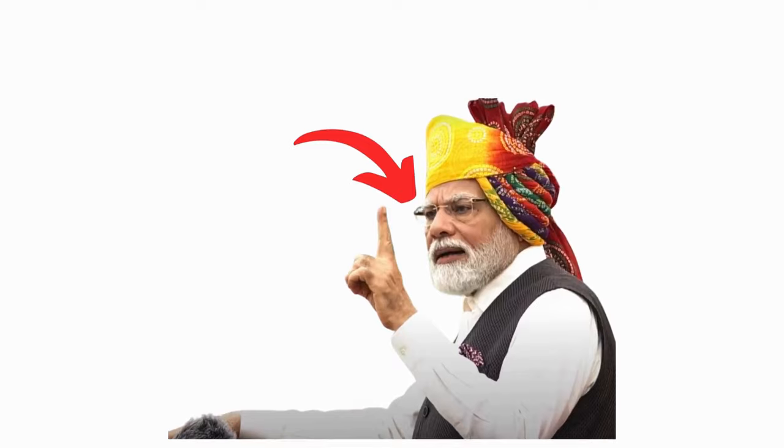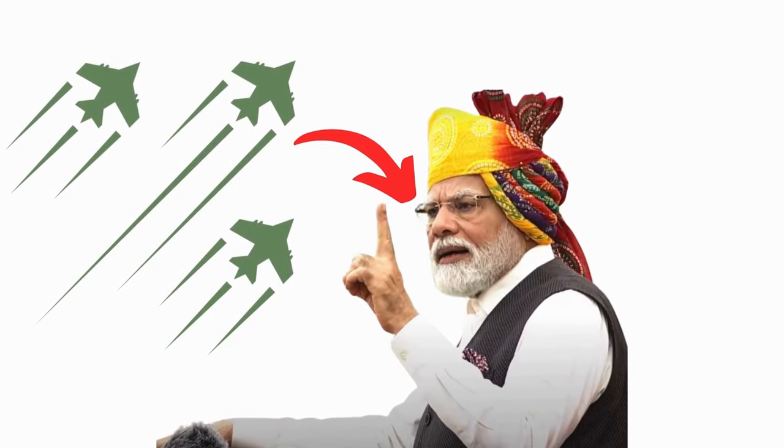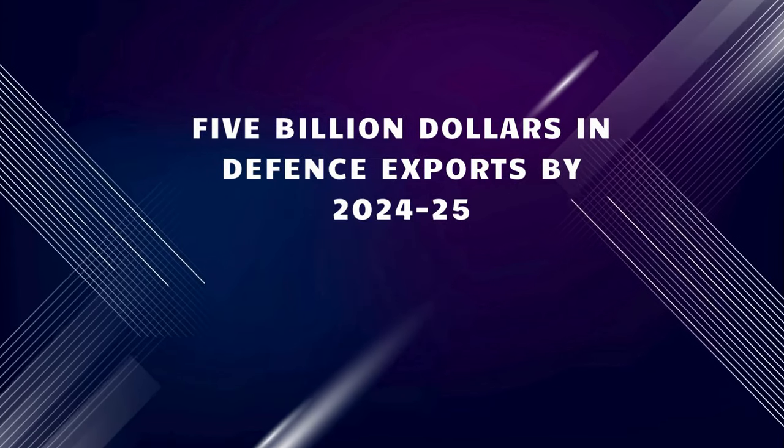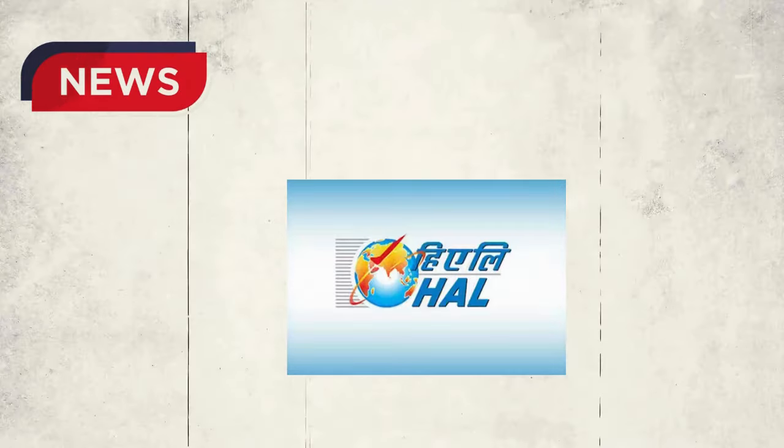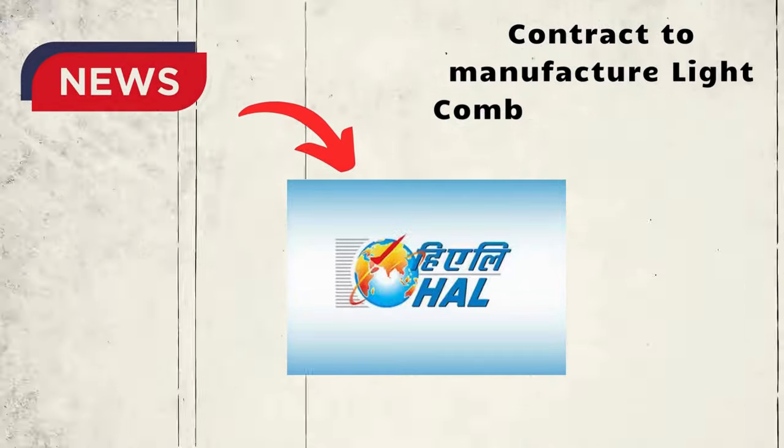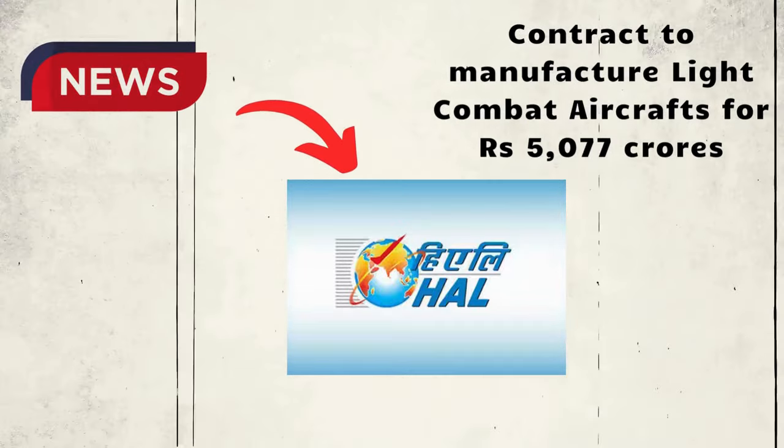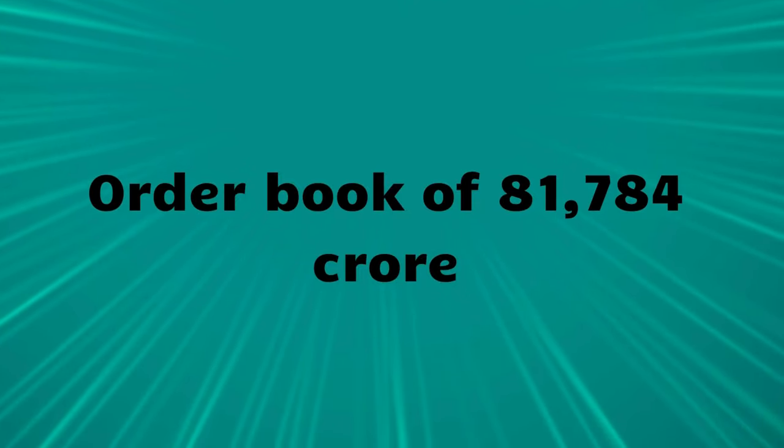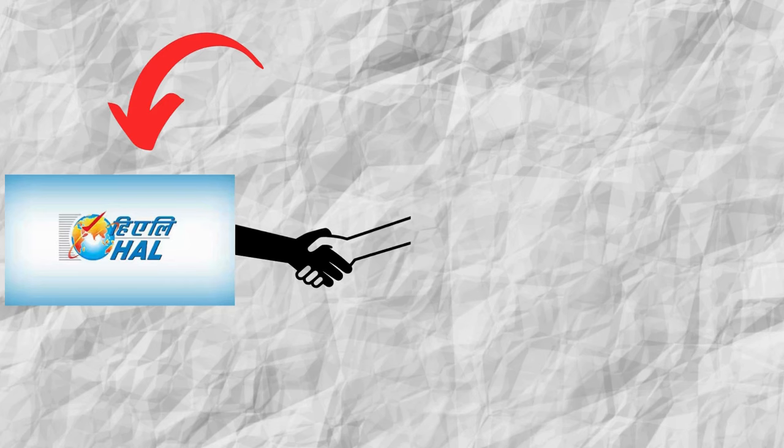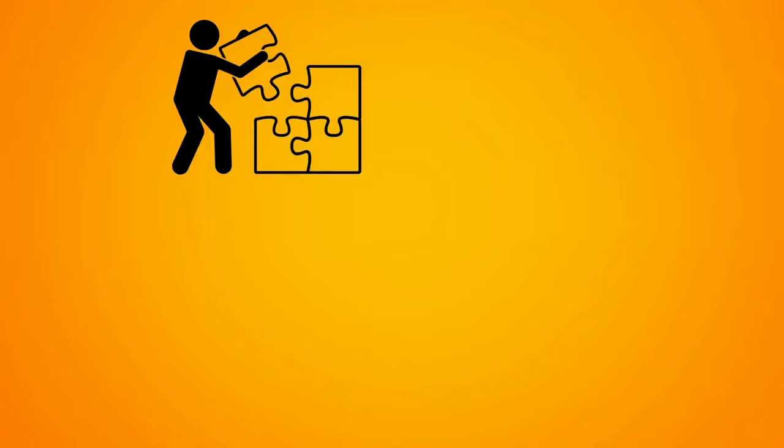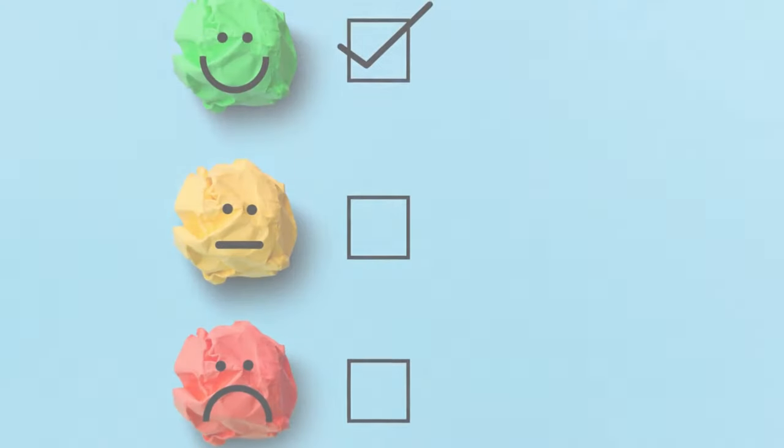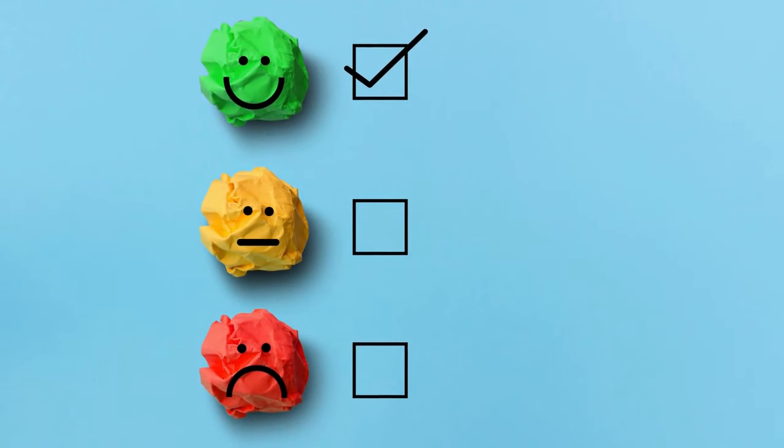The Prime Minister has been pushing for indigenous production of defense products and has set an ambitious target for $5 billion in defense exports by 2024-25. In recent news, Hindustan Aeronautics has signed a contract to manufacture light combat aircraft for 5,077 crores. The company currently has an order book of 81,784 crores. This stock has a heavy dependence on Ministry of Defense for contracts. They also build aerostructures for Indian Space Research Organization and global original equipment manufacturers like Airbus and Boeing. Analysts have given an 80% buy rating for the stock.